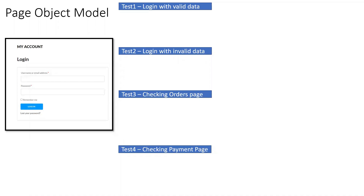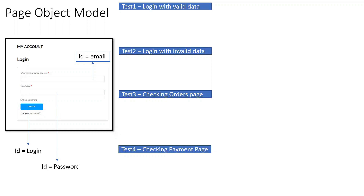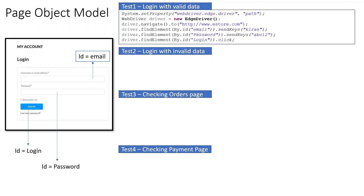From these test cases, login is common across all of them. First: valid data. Second: invalid data. Third: login for checking orders. Fourth: login for checking payments. In each of these four different tests, elements like email, password, and login button are common. We will use the ID called email, the ID called password, and the ID called login. The structure involves system.setProperties, opening the edge driver, navigating to the e-store, then driver.findElementBy ID email, driver.findElementBy ID password, and ID login.